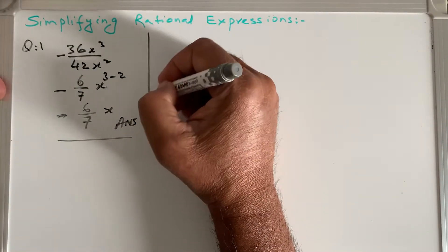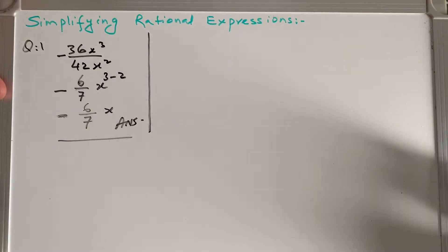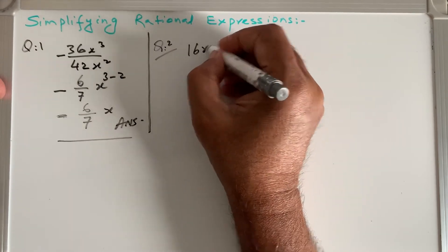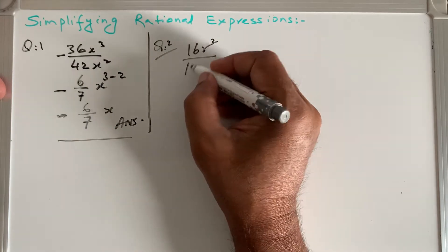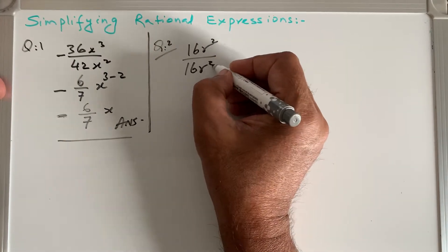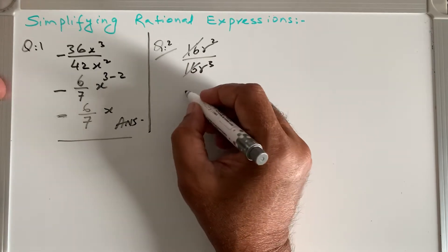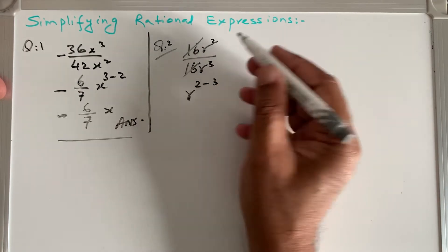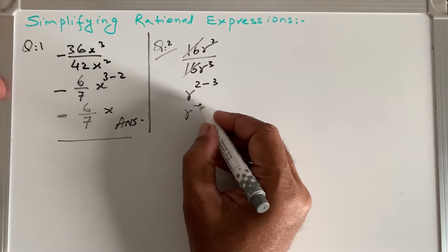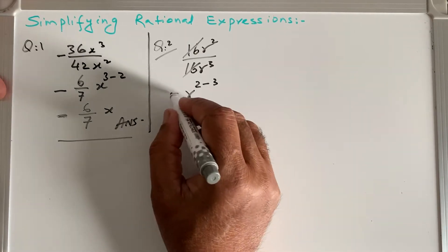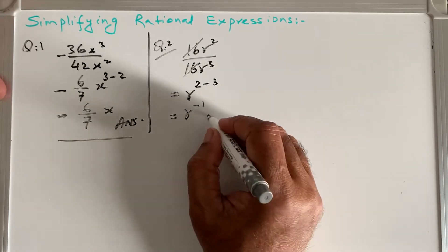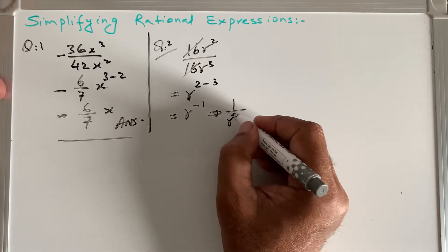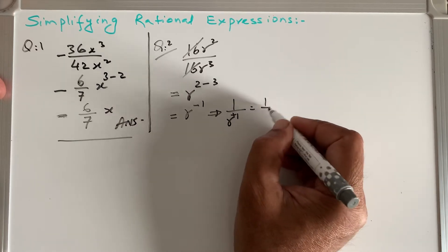Question 2: 16r² / 16r³. The 16s cancel. We apply the exponent rule: r^(2-3) = r^(-1). We don't want a negative exponent, so we move it to the denominator and it becomes positive. The answer is 1/r.